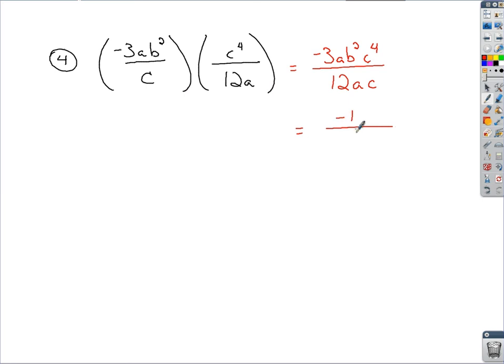As far as the a's are concerned, you've got an a to the first and an a to the first. Since these are all multiplied parts, you can cancel those out.